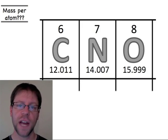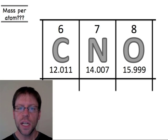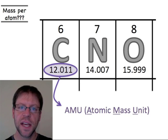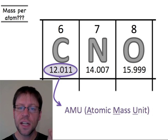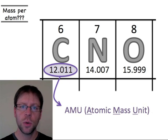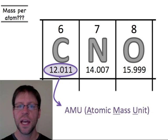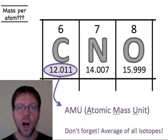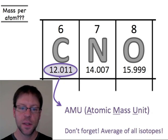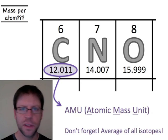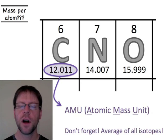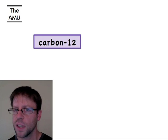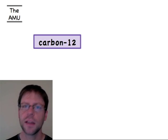I need a conversion factor to complete the calculation. Luckily, the periodic table has those conversion factors. The numbers underneath each element — the average atomic masses — are given in a very particular unit: AMU, atomic mass units. Don't forget that they actually represent the average of all different possible isotopes for that element. For carbon, it can be carbon-12, carbon-13, or carbon-14, and the listed value is an average across all those possible isotopes.